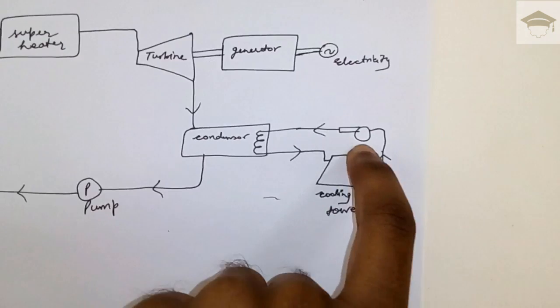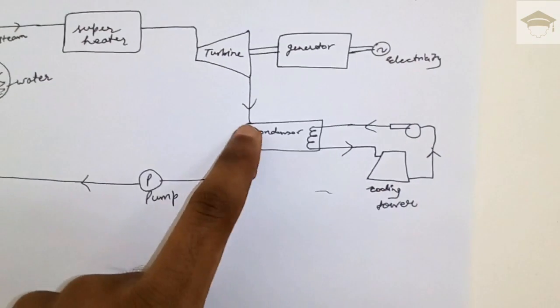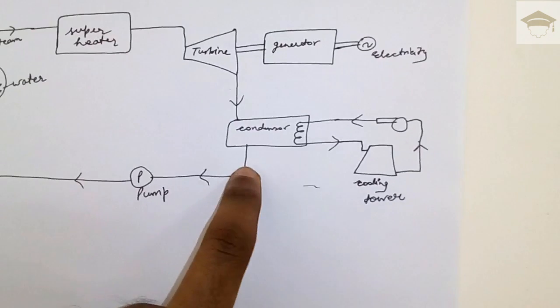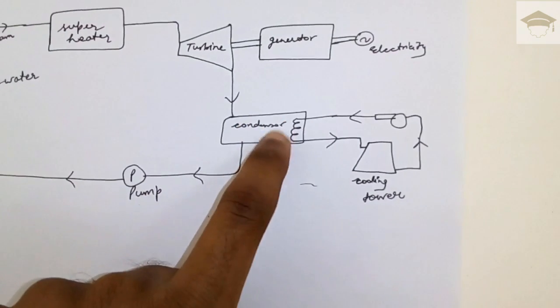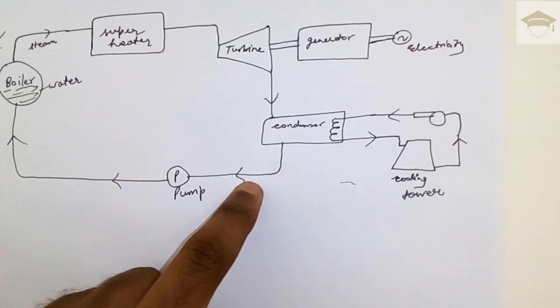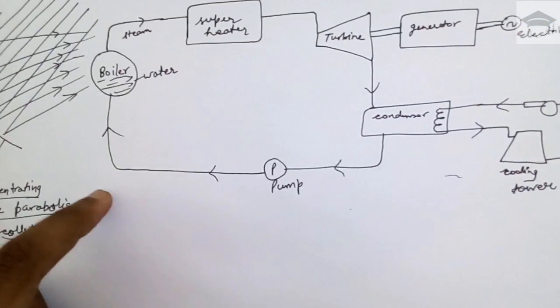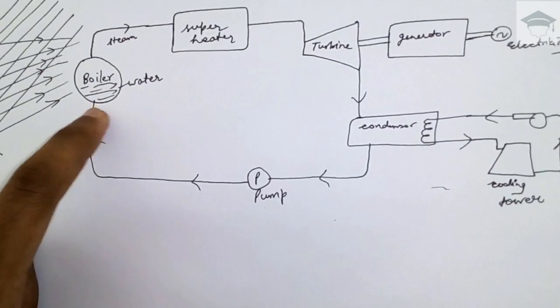The steam has been converted into saturated water because it has lost its heat in the condenser. So this saturated water is again pumped and made to go into the boiler, and hence the cycle repeats.